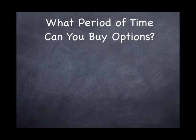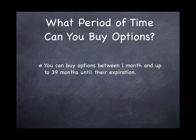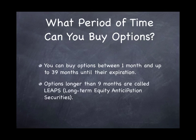What type of period can you buy options for? You can buy options anywhere between one month and 39 months until their expiration. The longer-term options — a lot of people have heard this term — they're called LEAPS, which stands for Long-Term Equity Anticipation Security. There's no difference from a regular option other than the amount of time that's in there.